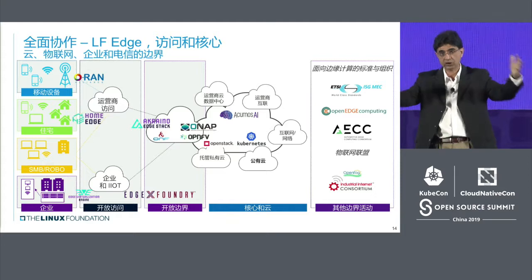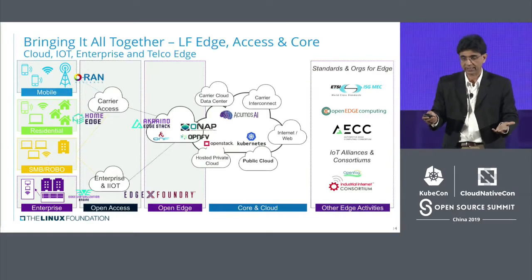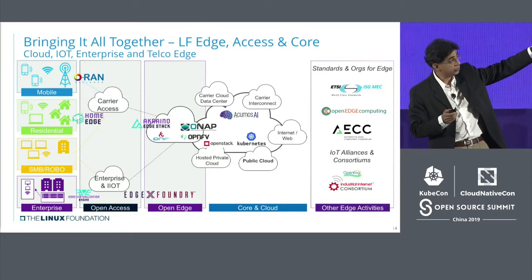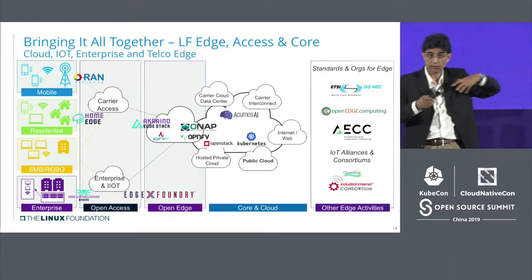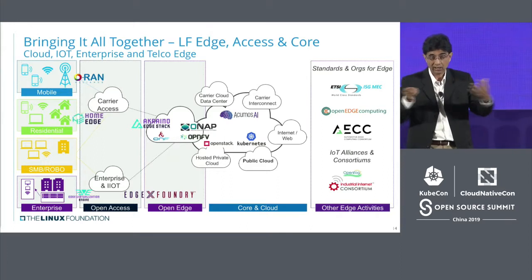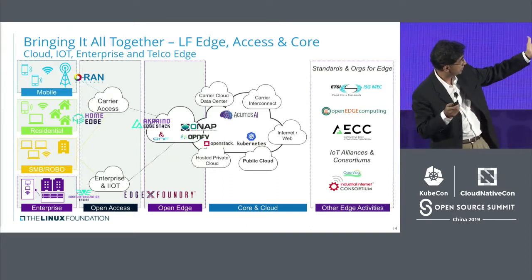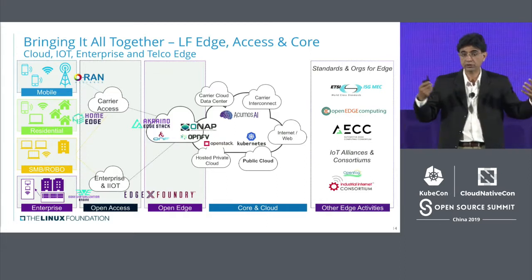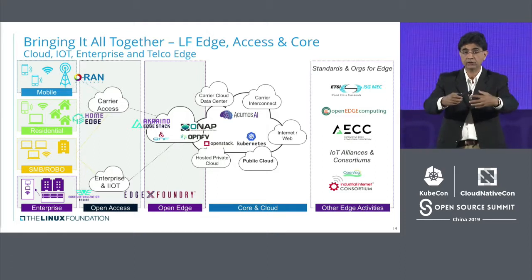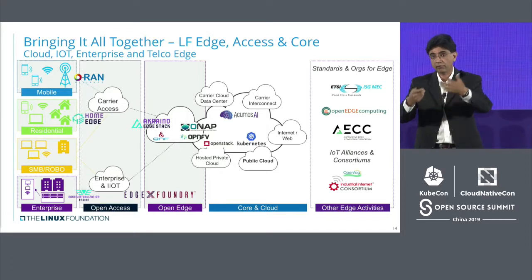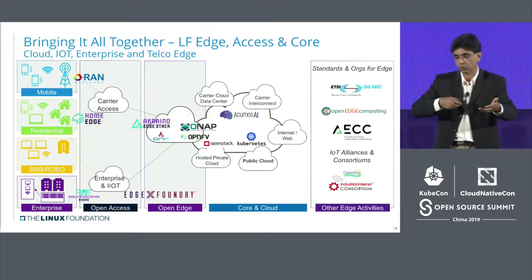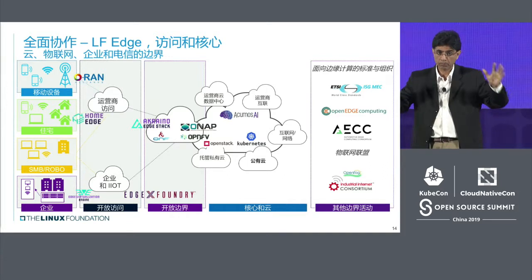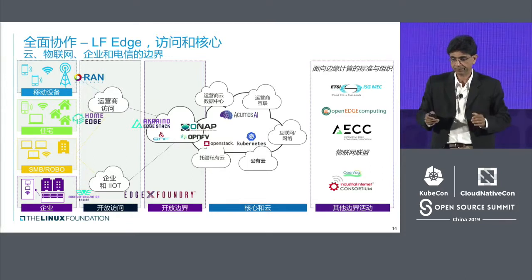This is how edge looks at the landscape. From the top, you collaborate with ORAN. Then you have a project called HomeEdge, which is the software that unifies the appliances inside the edge. Then you have EVE, the on-prem edge, which feeds into an Akraino blueprint that glues everything together, and then moves into the core running ONAP. ONAP works with Kubernetes and OpenStack, and then works with all the standards.